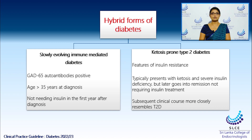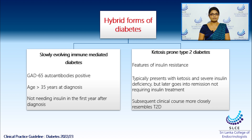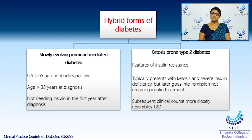Let's talk about the hybrid forms of diabetes. This is when one cannot exactly diagnose if your patient has either type 1 or type 2 diabetes, because your patient has both features of type 1 and type 2. There are two varieties. The first is the slowly evolving immune-mediated diabetes. In this form, your patient will have autoantibodies — GAD65 autoantibodies in particular. Your patient will be above the age of 35 at diagnosis and there will be no need for insulin in the first year after diagnosis.